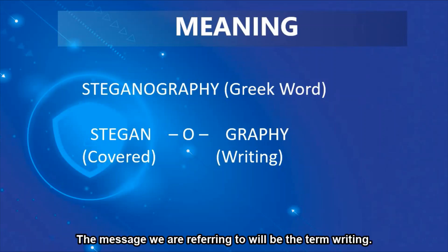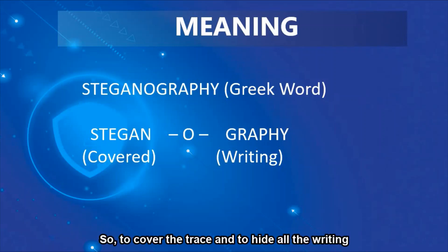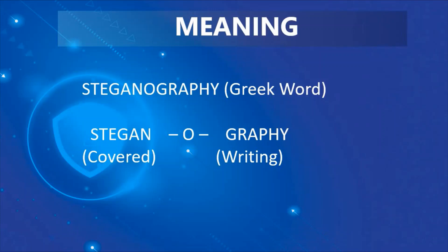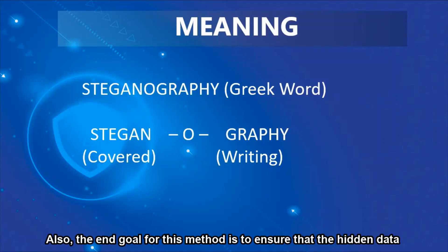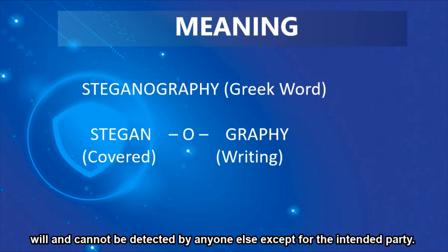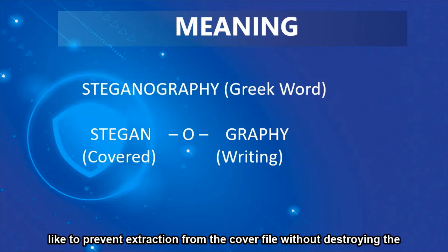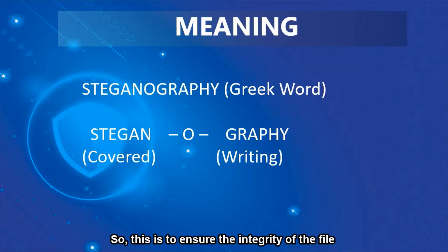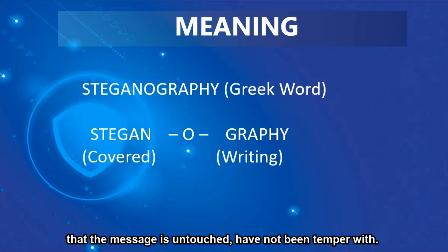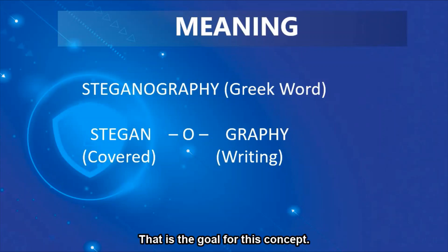The message we are referring to will be a written term — covering the trace and hiding all the writings. The end goal for this method is to ensure that the hidden data cannot be detected by anyone except for the intended party. There is also a secondary goal: to prevent extraction from the cover file without destroying the cover, ensuring the integrity of the file so the message is untouched and has not been tampered with.